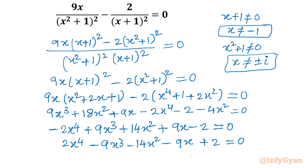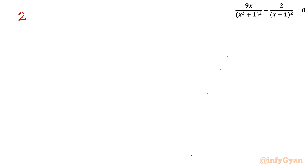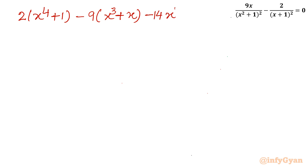See this quartic equation — it has identical coefficients. The leading coefficient and constant are the same, and one degree shorter terms are also symmetric. This is a reciprocal equation. So I will take 2 common from the first and last terms, and minus 9 common from the second and second-last terms: 2(x⁴ + 1) minus 9(x³ + x) minus 14x² equal to 0.